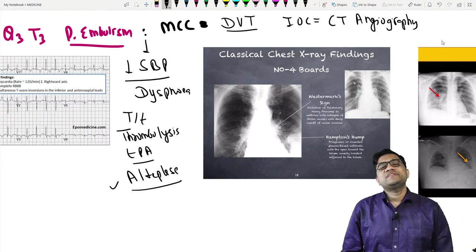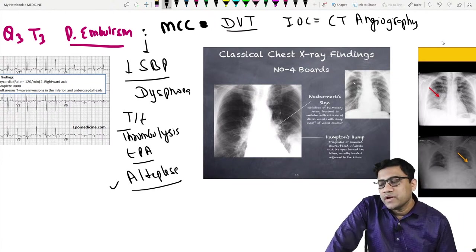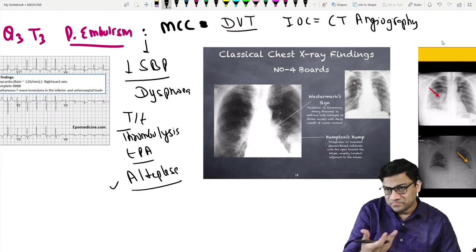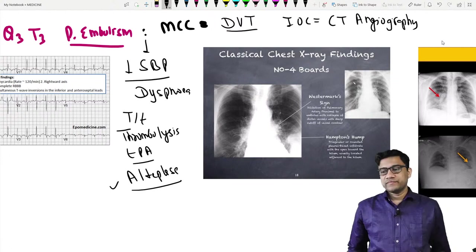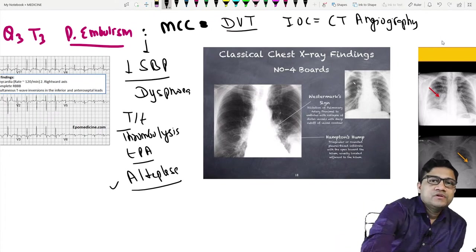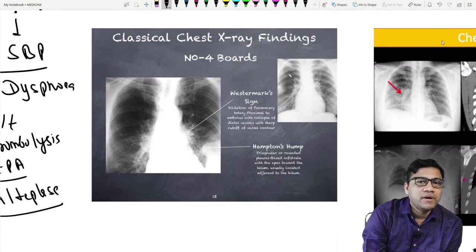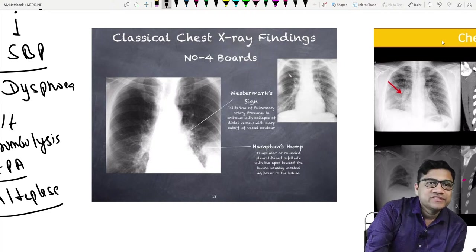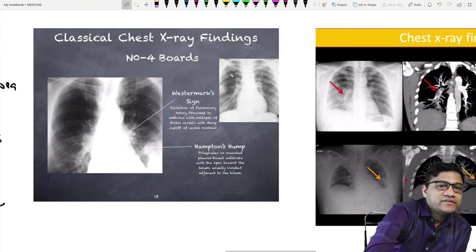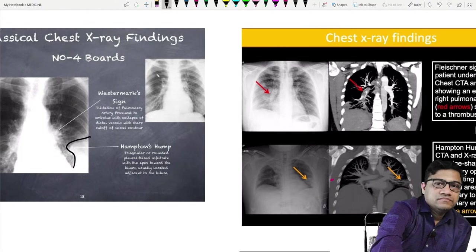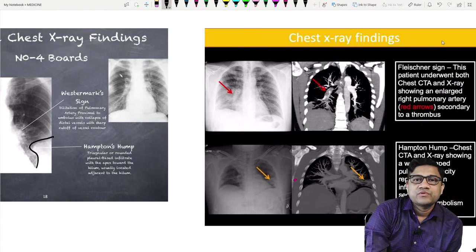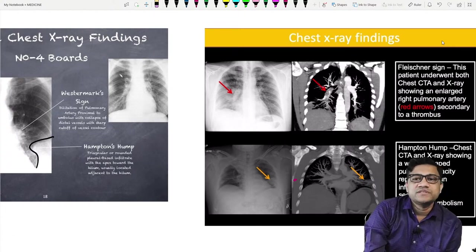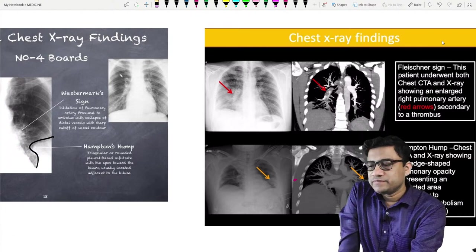Other investigations include checking the D-dimer and the V/Q ratio, but CT angiography is the primary choice. The imaging findings include Westermark sign — dilatation of the pulmonary artery — and Hampton's hump. We discussed these already, so now we'll move directly to the topic of the endocrine system.